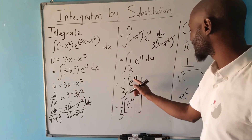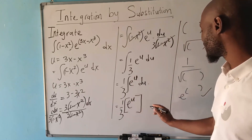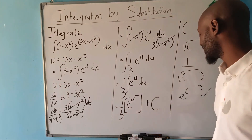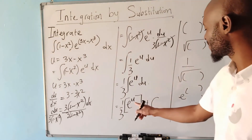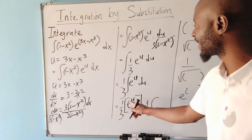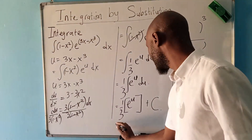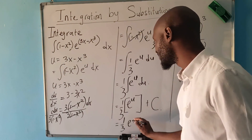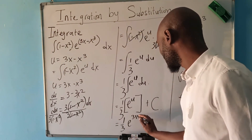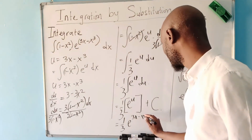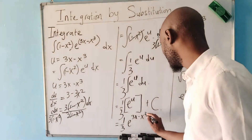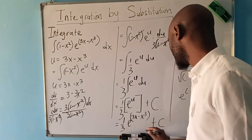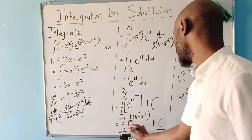Now we know the value for u, so we can substitute it back. This was our u, so we are going to have (1/3) e^(3x − x³), and since we are integrating without limits we add the arbitrary constant C.